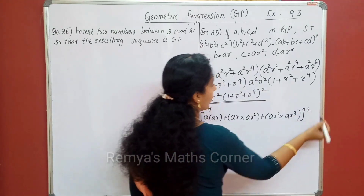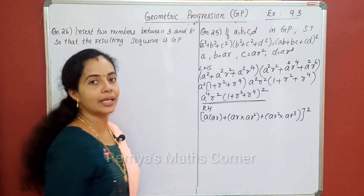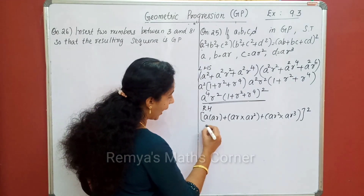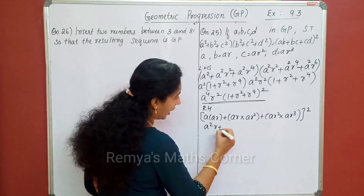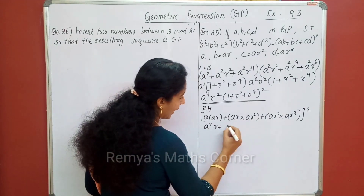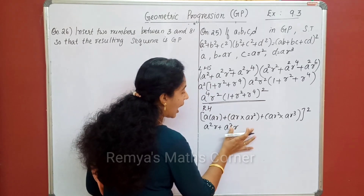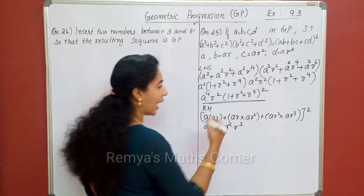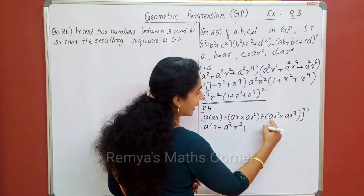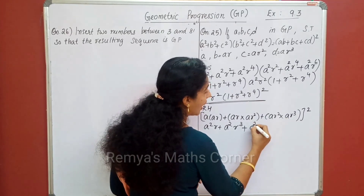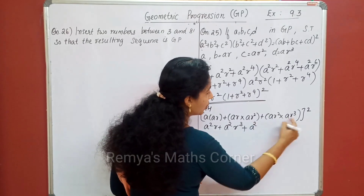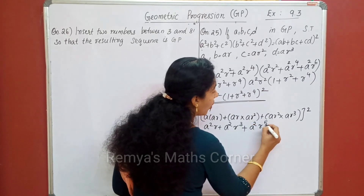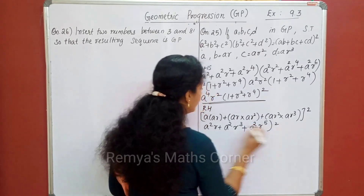So, the whole square — this is the same. Let's see. A square r. 1 square. r raised to 1. r raised to 2. r raised to 3. Then, a square. r raised to 2. r raised to 3. r raised to 5. The whole raised to 2.